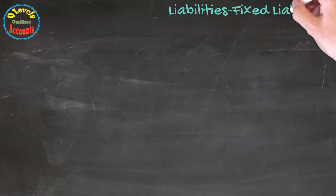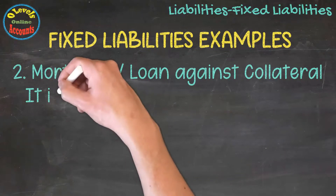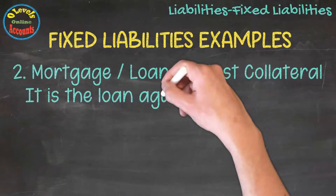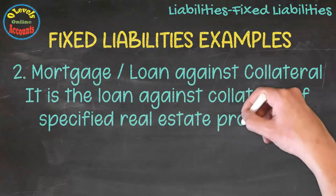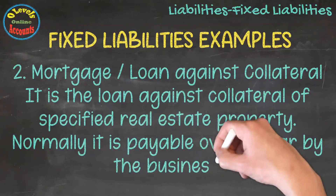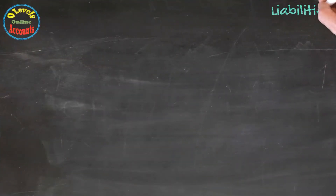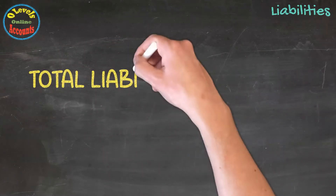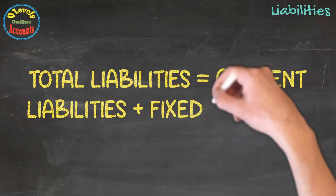The second example of fixed liabilities is mortgage, or loan against collateral. It is the loan against collateral of a specified real estate property, and is normally payable over a year by the business. After discussing current and fixed liabilities, we conclude that total liabilities are equal to current liabilities plus fixed liabilities.